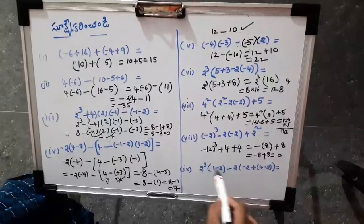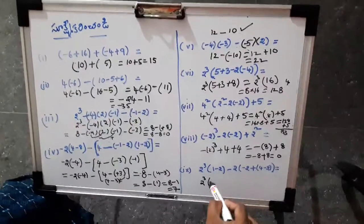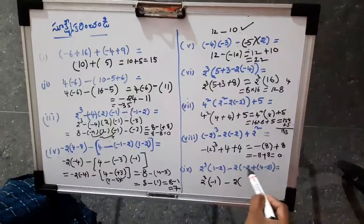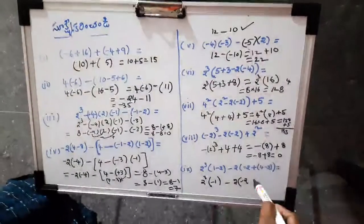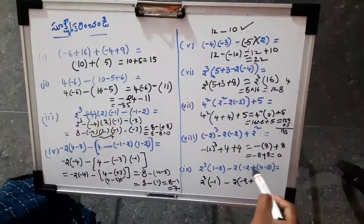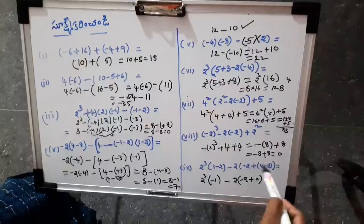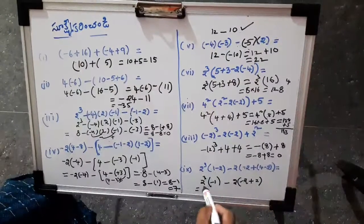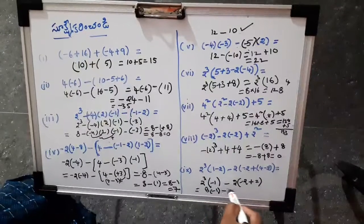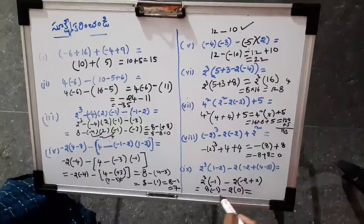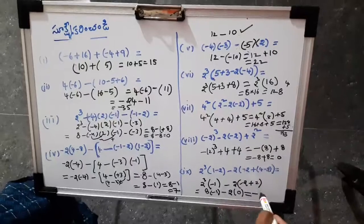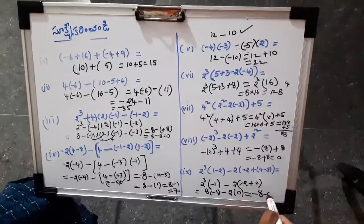Now let's start 2 cubed in the bracket. 1 minus 2 is minus 1. Minus 2. So first: 2 minus 2. You don't need to start 2. 4 minus 2 is 2. In the bracket there is 2 plus 2. In the bracket there is 2 plus 3 plus 2 plus 2. So 2 cubed into minus 1. First, 2 cubed into 8. 8 into minus 1. Minus 2 into 0. So 2 and 8 into minus 1. Plus into minus 1. So minus 0. The answer is minus 0.